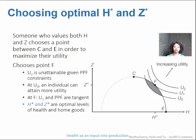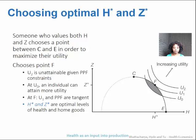We have all of these possible options along the curve of how much to allocate between health and everything else — non-health utility. A person who values both of those things, both health and everything else, is going to choose a point between C and E to maximize their utility. Because C maximizes Z and E maximizes H, if you like them both, you want something in between.